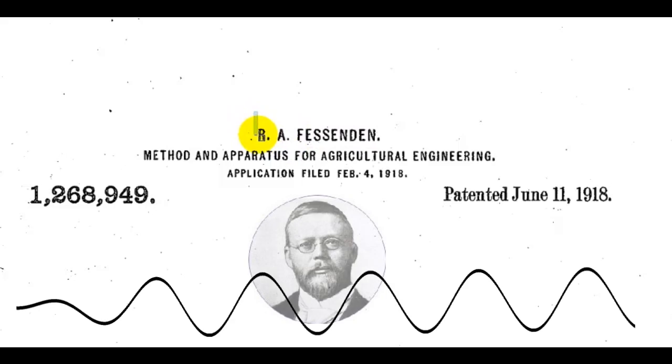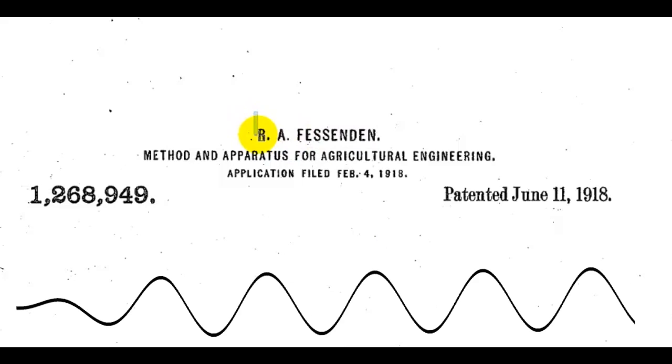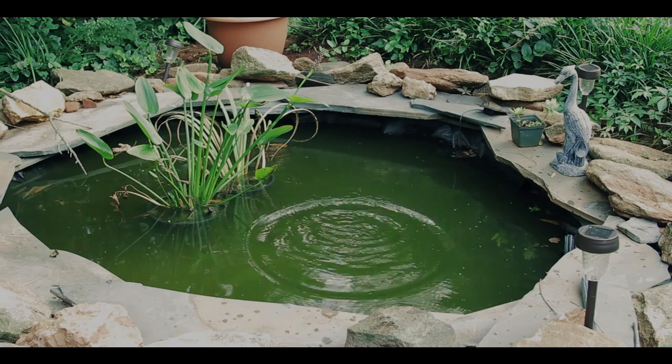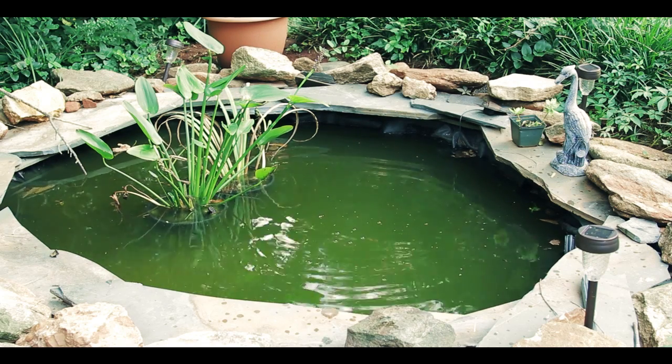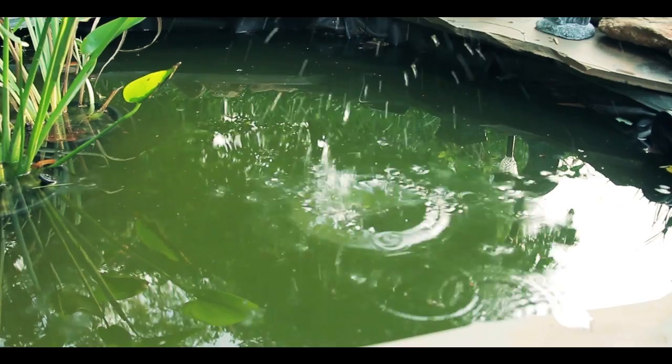The story goes that Fessiden, while throwing rocks in a pond and observing the effects, had the Archimedes-Eureka moment, where he realized that radio waves moved in concentric circles from a source, just like rocks thrown in a body of water.